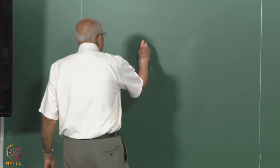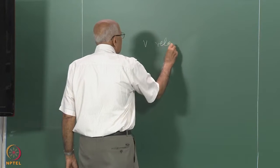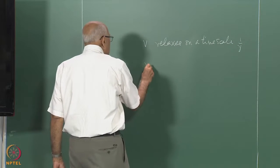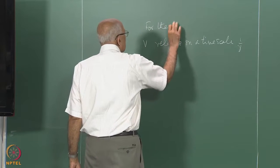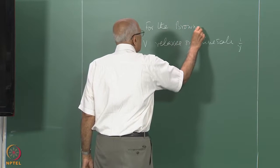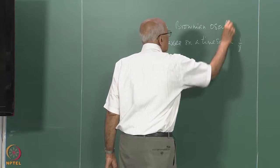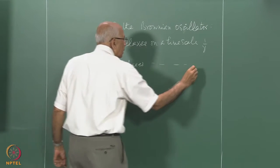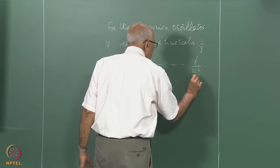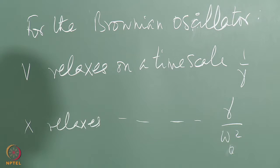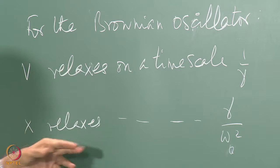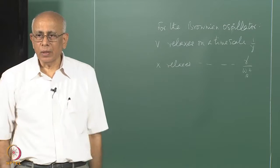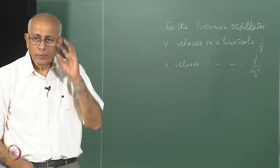So it turns out that v relaxes on a time scale of 1/gamma, but x for the Brownian oscillator relaxes on a time scale of gamma over omega-naught-squared. The fact that both are Ornstein-Uhlenbeck processes is responsible for the statement in many books that the Ornstein-Uhlenbeck process is called the oscillator process — meaning it is the position of the harmonic oscillator in the overdamped case.